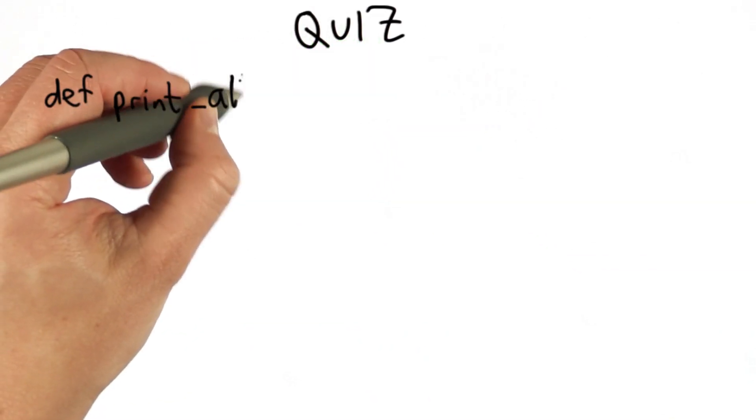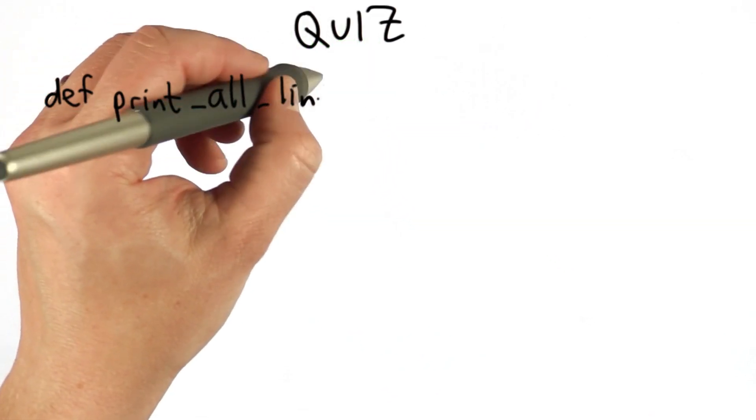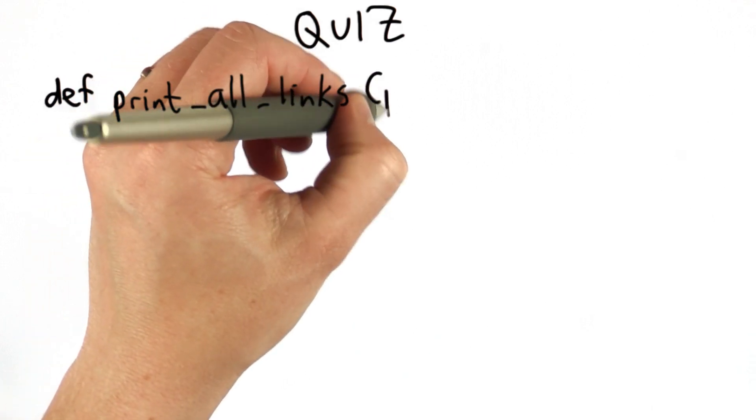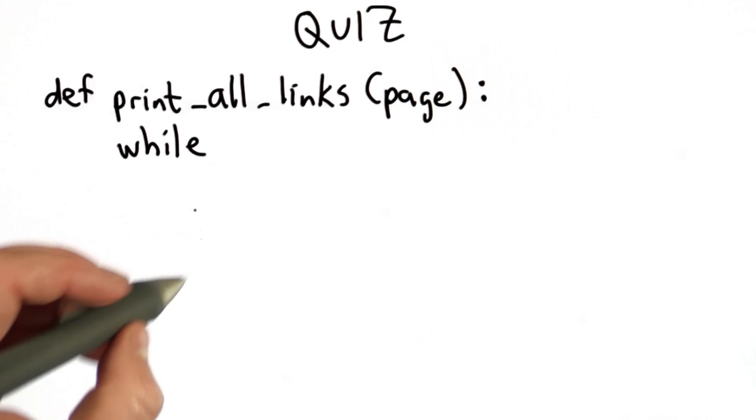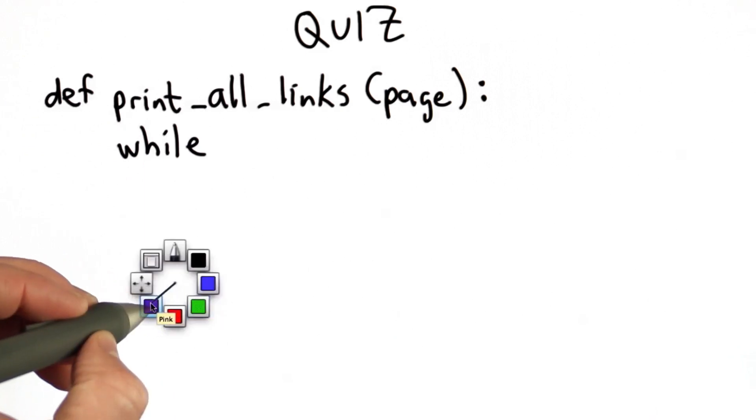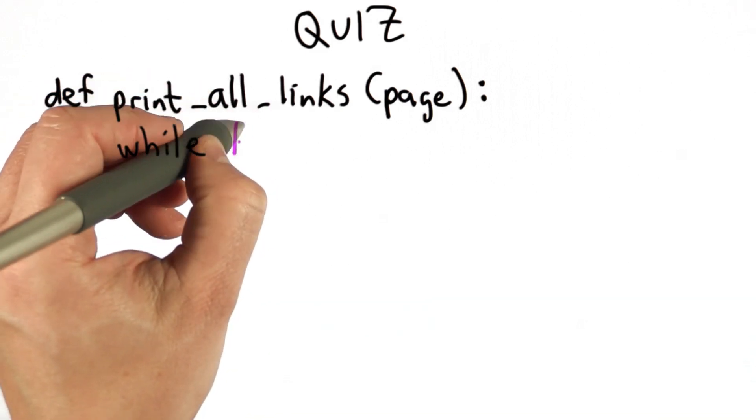So what we're going to do is define a procedure that will print all the links on the page. And it takes the page as input. And so we want to use a while loop to keep going. And I'm going to leave blank the test condition for the while loop.